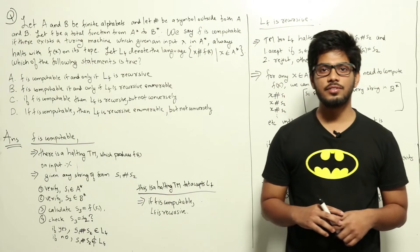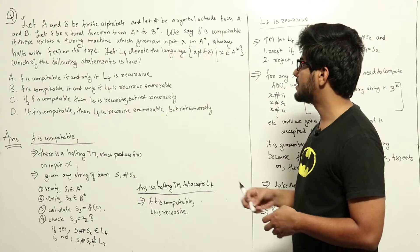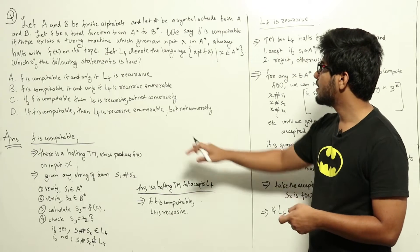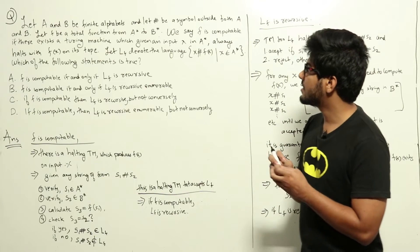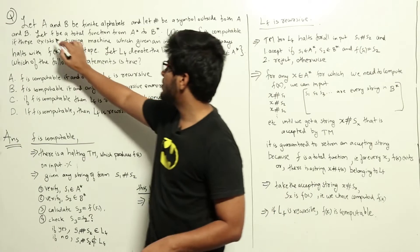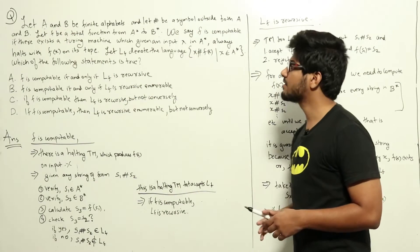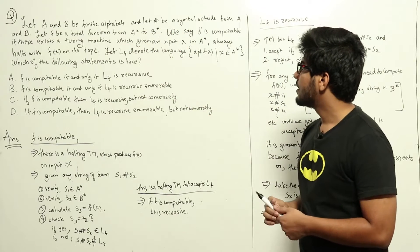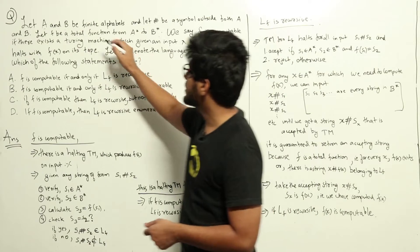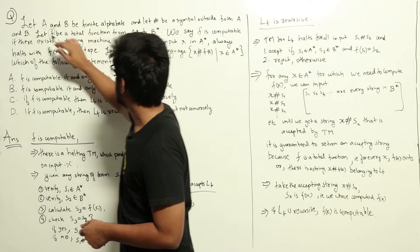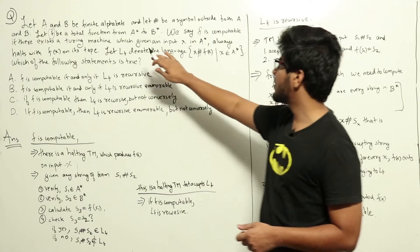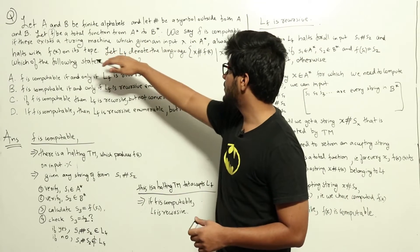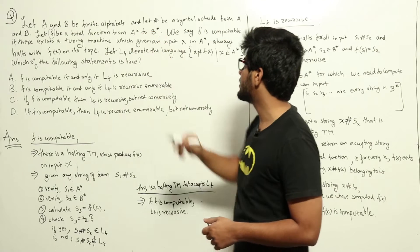This is a question from theory of computation regarding halting Turing machines, computability, and recursive and recursively enumerable languages. In the question, we are given two finite alphabets a and b, and hash is a symbol outside both. We have a function f from a-star to b-star, meaning given any string in a-star, this function gives the corresponding string in b-star.